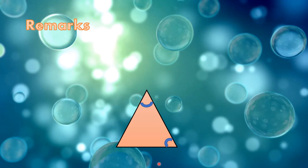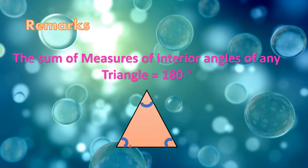A triangle has three angles. The sum of the measures of the interior angles of any triangle is 180 degrees. That means this angle plus this angle plus this angle equals 180 degrees. The sum of the interior angles of any triangle equals 180 degrees.